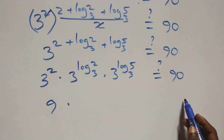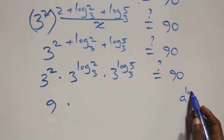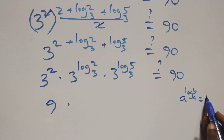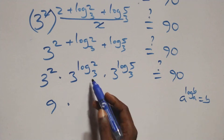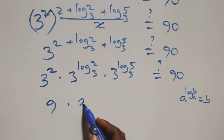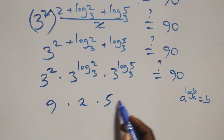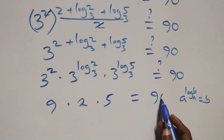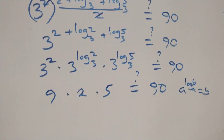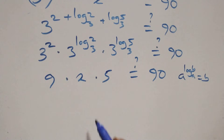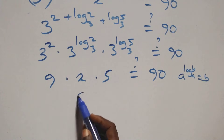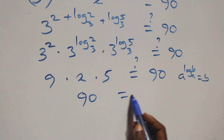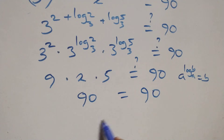Now we apply the identity a raised to the power log base a of b equals b. So 3^(log base 3 of 2) equals 2 and 3^(log base 3 of 5) equals 5. This gives us 9 times 2 times 5 equals 90, and 9 times 10 equals 90, which equals 90.